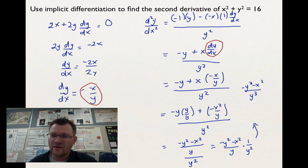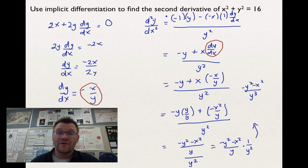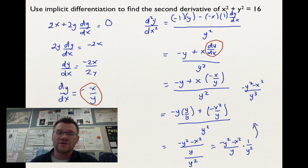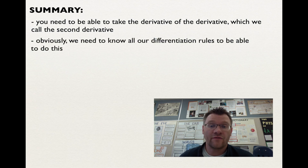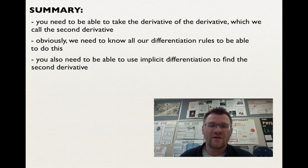So our final answer for the second derivative using implicit differentiation is negative (y squared plus x squared) over y cubed. The key thing here is that you can usually make a substitution for dy/dx, because you would know exactly what dy/dx is from the first part. In summary, you need to be able to take the derivative of the derivative — the second derivative — using all differentiation rules: the product rule, chain rule, quotient rule, and implicit differentiation.